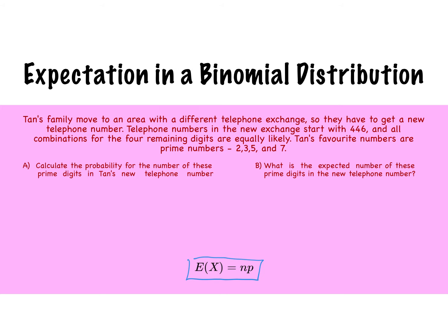And all combinations for the four remaining digits are equally likely. Tan's favorite numbers are prime numbers: 2, 3, 5, and 7. So let's calculate the probability for the number of these prime digits in Tan's new telephone number.